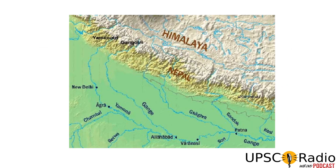Here we have the Himalayas. In the front we have Shivalik mountains, and behind them the Greater Himalayas. From these mountains, the Yamuna River originates from the Yamunotri glacier, and the Ganga River originates from the Gangotri glacier. As you already know, the Yamuna flows through New Delhi and Agra. The Ganga flows parallel and they do not mix until they reach Allahabad, where they finally join.